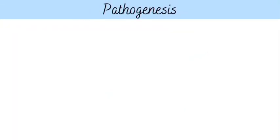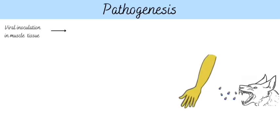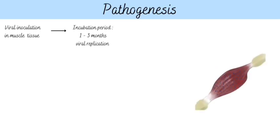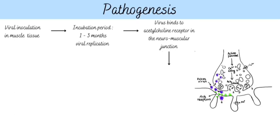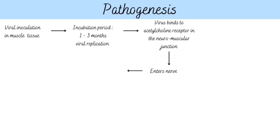Pathogenesis. After the virus is inoculated into the body, it replicates multiple times in the muscle fibers. It then binds to the nicotinic receptors at the neuromuscular junction, enters the CNS by ascending along the peripheral nerves from the wound. The incubation period is 1–3 months, depending on the distance between the wound and the brain.